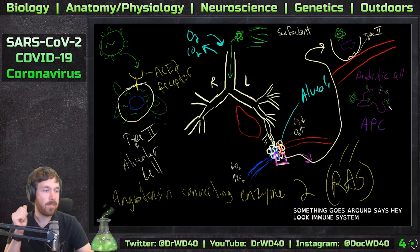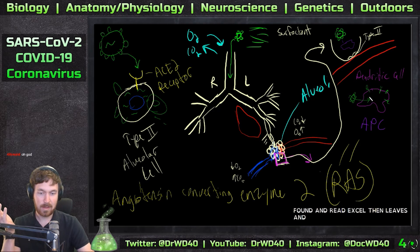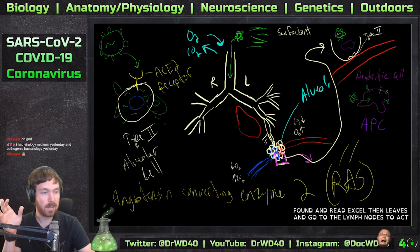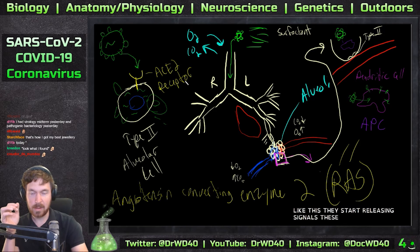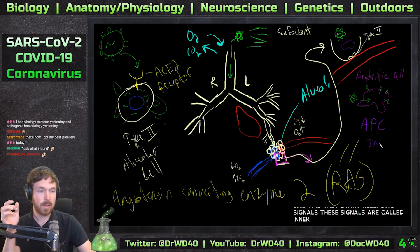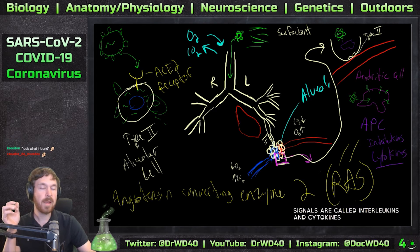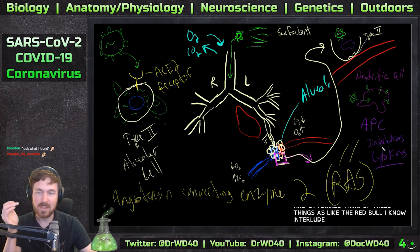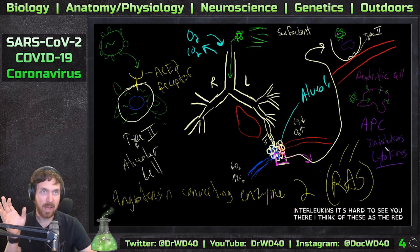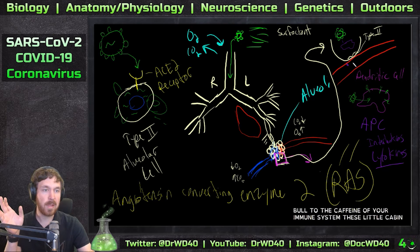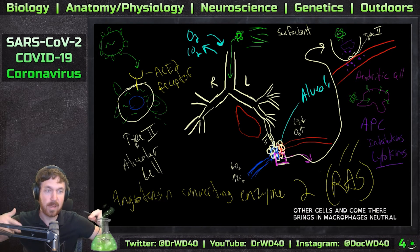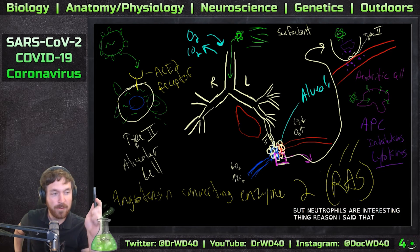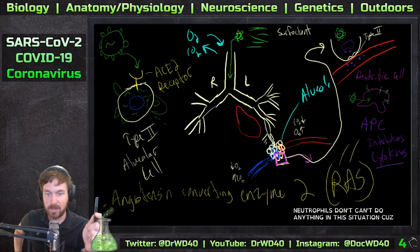The dendritic cell says 'hey immune system, look what I found,' then leaves and goes to the lymph nodes to activate the response. These dendritic cells also release signals called interleukins and cytokines - think of these as the Red Bull or caffeine of your immune system. These little chemicals are secreted and mount a massive immune response to that region. Other cells come in: macrophages, neutrophils - though neutrophils are interesting because they can only fight bacteria.